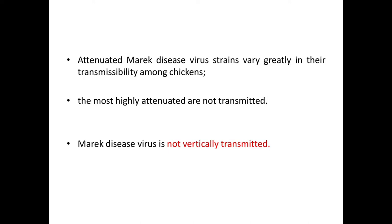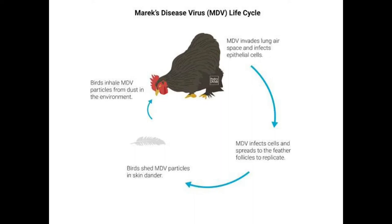Now let's see the Marek's disease virus life cycle. Birds inhale MDV particles from dust in the environment, and MDV invades the lung airspace and infects epithelial cells. The MDV then infects cells and spreads into the feather follicle to mature and replicate. The birds shed MDV particles in skin dander, which again get inhaled by another bird, and that bird becomes infected.